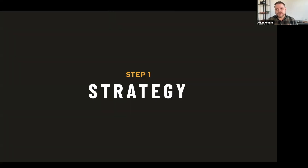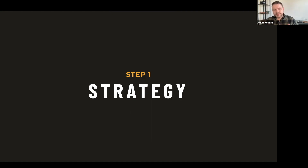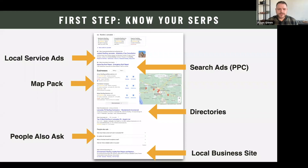We're going through a five-step strategy to rank your website — this is the 80/20 of SEO, the 20% of things you can do that will get you the first 80% of results. I want to cover the core things any business, small or large, can do to improve their search engine optimization. First is strategy, and the first part of strategy is getting to know your SERP.